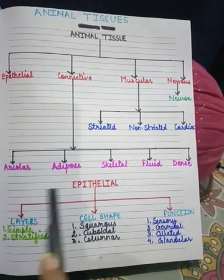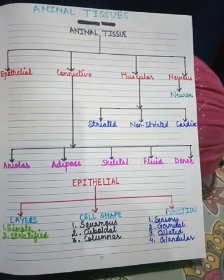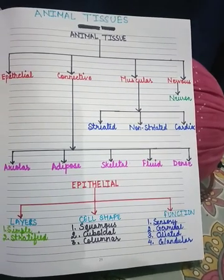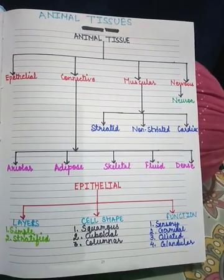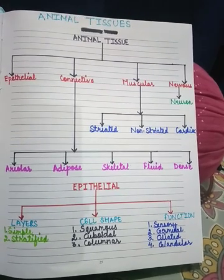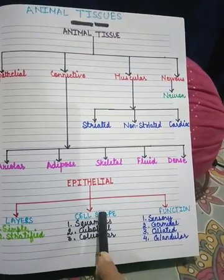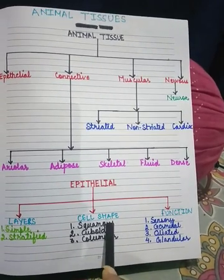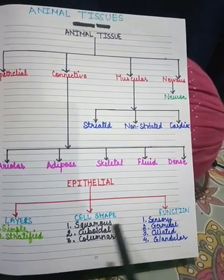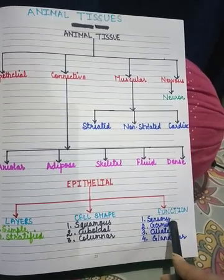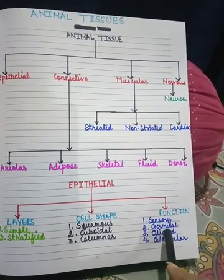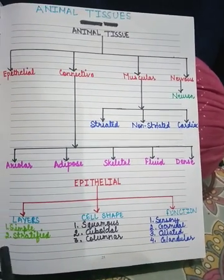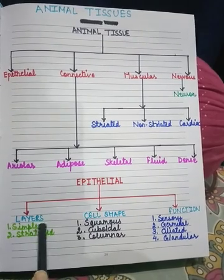Simple epithelial tissues are located on the surface of the body and they line all the body cavities and internal organs including the blood vessels. Their shape is flat, cuboidal, or columnar. Based on function, they are divided into sensory, germinal, ciliated, and glandular epithelial tissue.